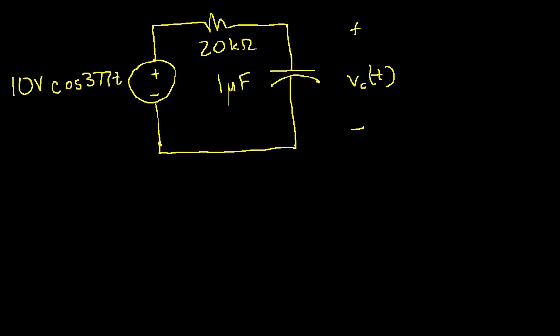And there are many different ways of approaching this. If you want to know exactly what happens to V sub C from the moment that you apply the source, then you actually need to do transient analysis, which is more complex than AC steady-state analysis. You may not believe me by the time we're done here. And that's actually beyond the scope of this video.